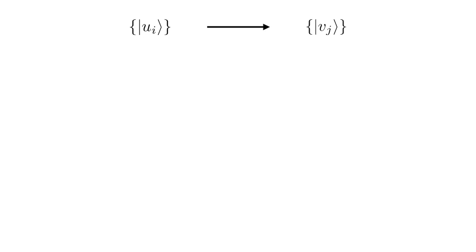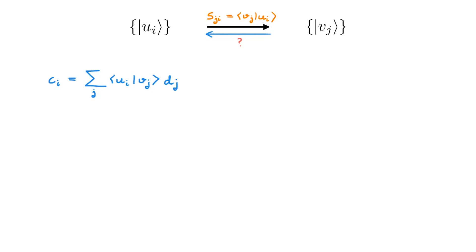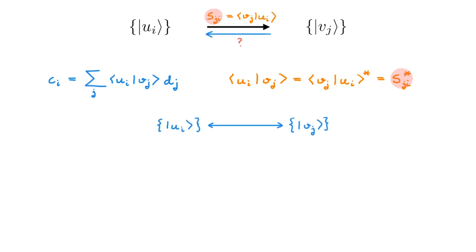Now that we have established that we can go from a basis u to a different basis v by calculating the overlap matrix S_ji, we can ask the opposite question: how do we go from the basis v to the basis u? The proof follows the exact same procedure, and the answer is that c_i equals the sum over j of the bracket u_i v_j times d_j. We can also write it in terms of the overlap matrix, because using conjugation, the bracket u_i v_j is equal to the bracket v_j u_i star, which is equal to S_ji star. So we can go from u to v using the overlap matrix, and from v to u using the conjugate of the overlap matrix. We can go in any direction between the u and v bases by calculating the overlaps between the two sets of basis states, using the overlaps directly or their conjugates.